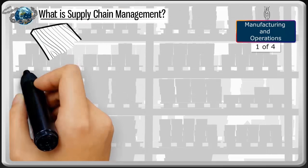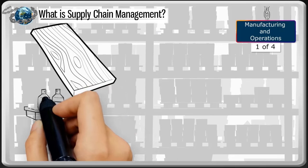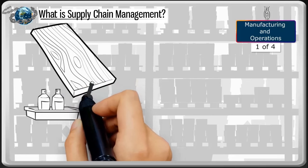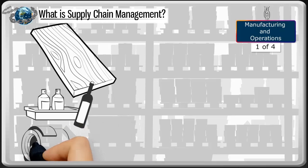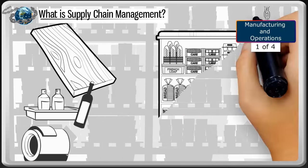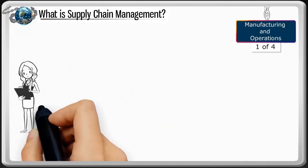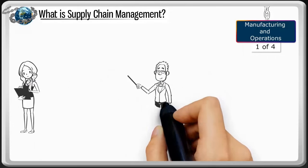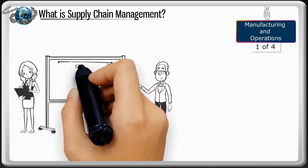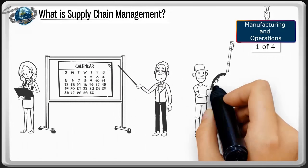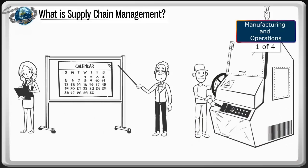Manufacturing is the part of the supply chain where raw materials, ingredients, and/or parts are put together through a process to produce a finished product. Jobs within manufacturing include planners, schedulers, and assemblers. They monitor the flow and quality of the products being produced.